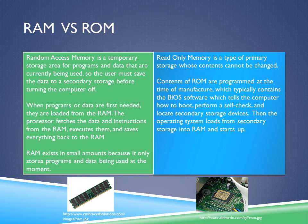Read-only memory, ROM, on the other hand, is a type of primary storage whose contents cannot be changed. Contents of ROM are programmed at the time of manufacture, which typically contains the BIOS, or the basic input and output system software, which tells the computer how to boot, perform a self-check, and locate secondary storage devices. Then the operating system loads from secondary storage into RAM and starts up.